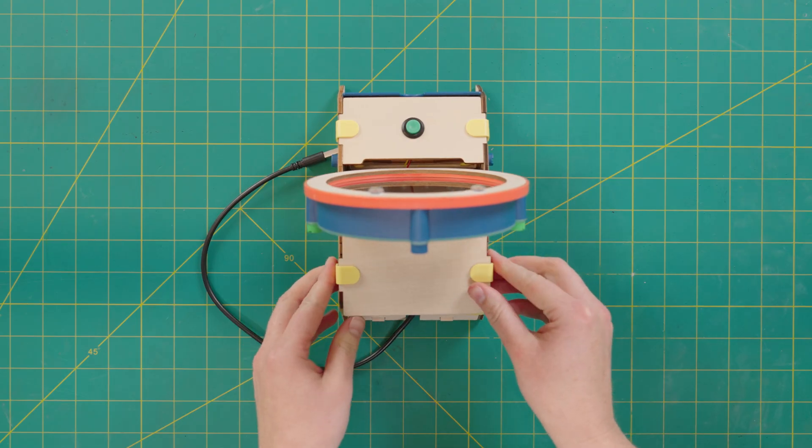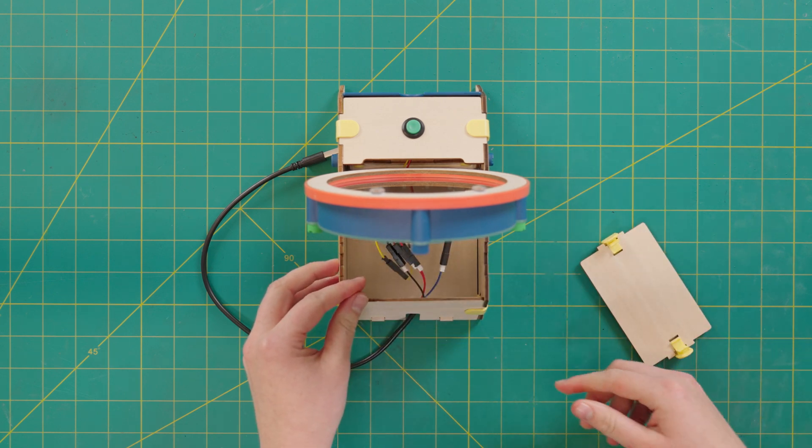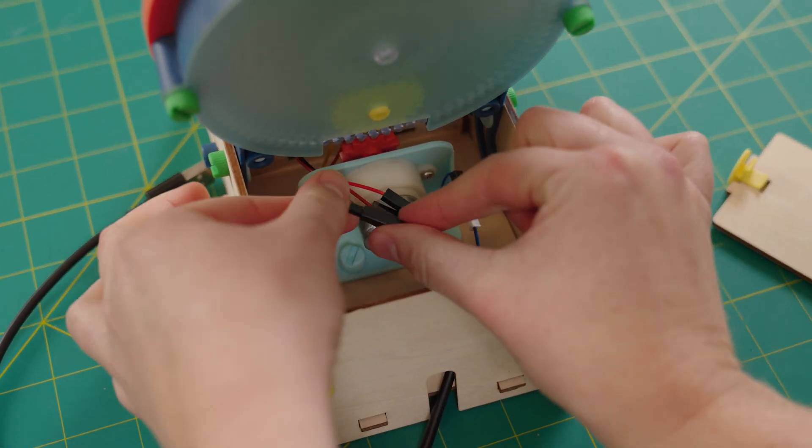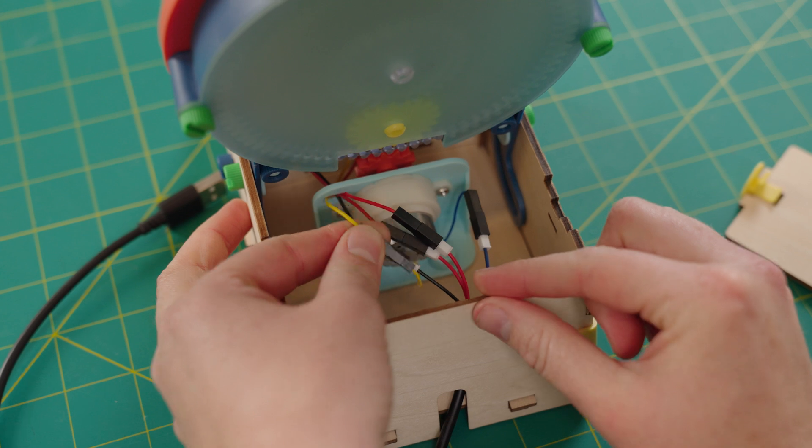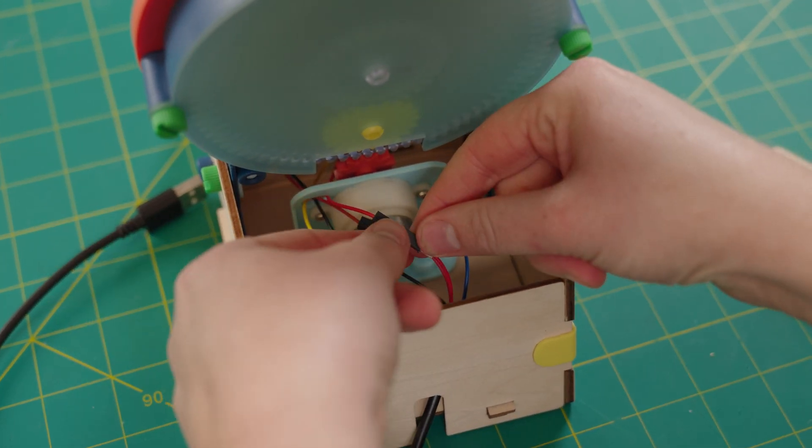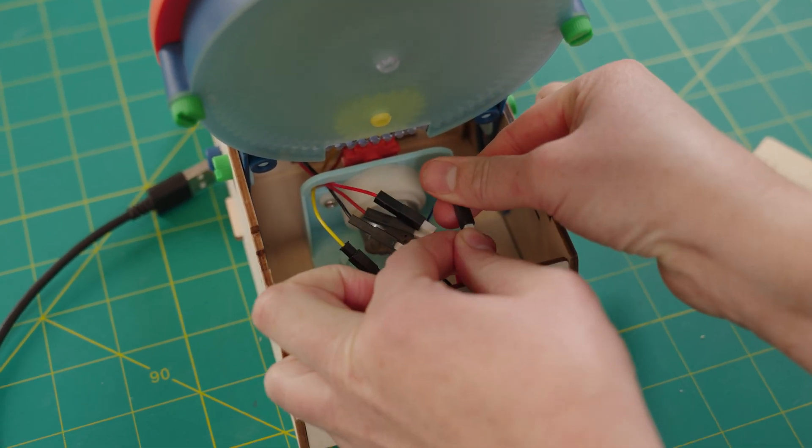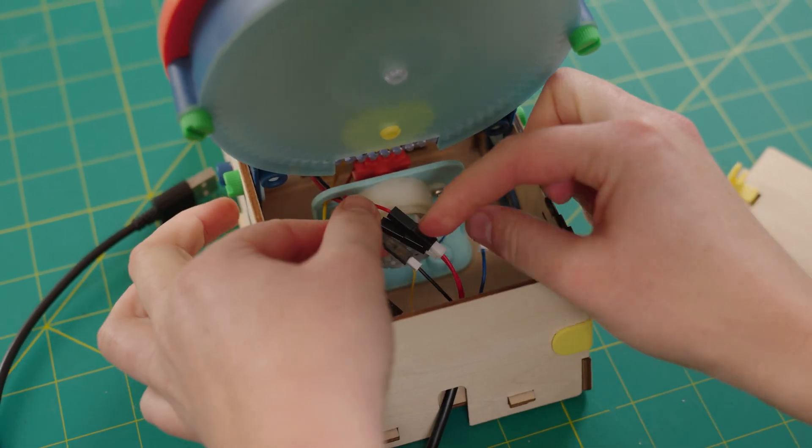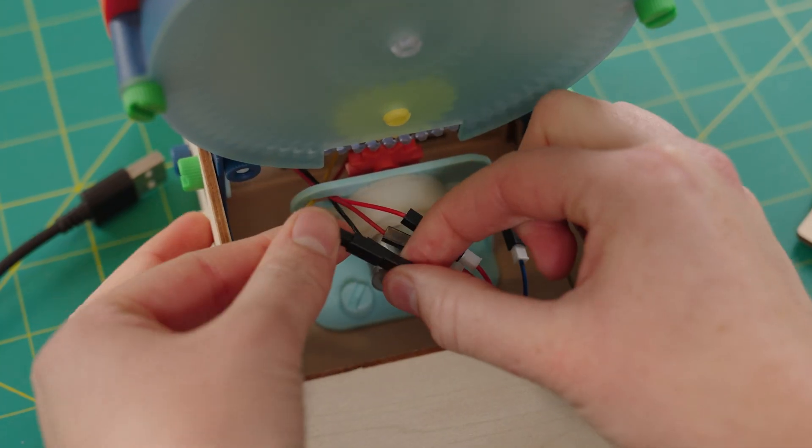Next, if either the lights don't turn on or the motor doesn't spin, let's go ahead and check each of these wire connections and make sure they are firmly connected and to the right color. Red to red, blue to blue, black to black, and yellow to yellow.